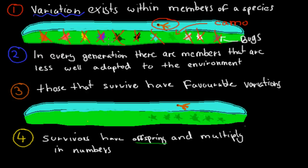Basically, that favourable trait — being really light green for camouflage — is now in more and more of the bugs. That's how natural selection works: variations exist within the species, some are better adapted, and those survive and dominate. For example, a couple of thousand years ago in Australia, if you had light skin you'd be in trouble — no sunscreen, no shelter — so the sun could kill you through skin cancer. Darker skin, like that of most Aborigines, was a favourable adaptation providing protection from the sun.